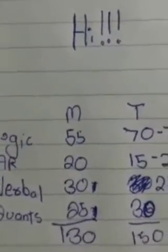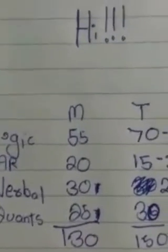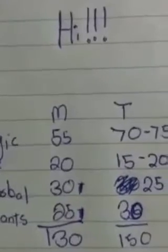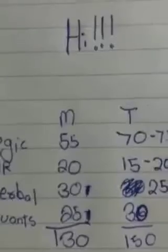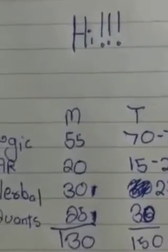In abstract I took 15 to 20 minutes and got 20 marks. Verbal, I think verbal is my strong point. So I gave only 25 minutes in which I scored 30 marks. Quants I gave 30 minutes and scored 25 marks.